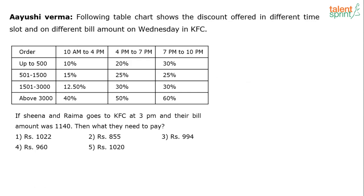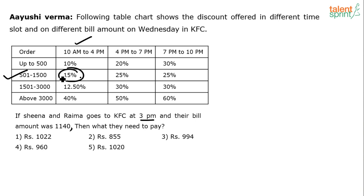First question: If Sheena and Rima go to KFC at 3 PM and their bill amount is ₹1140, what do they need to pay? 3 PM falls in the 10 AM to 4 PM slot. Their bill of ₹1140 falls in the 501–1500 range, so they get 15% discount, meaning they pay only 85%.